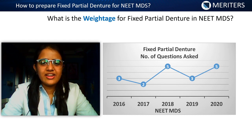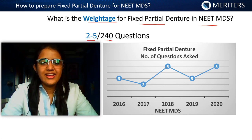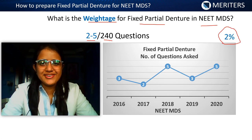Looking at the weightage for FPD in the NEET MDS exam, in the past few years approximately 2 to 5 questions out of the total 240 questions are asked from this topic. This accounts for approximately 2% of your entire paper.